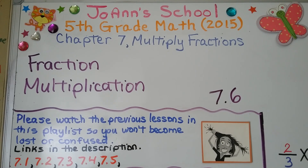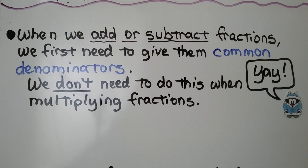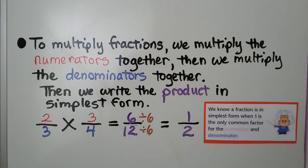Lesson 7.6: Fraction Multiplication. When we add or subtract fractions, we first need to give them common denominators. We don't need to do this when multiplying fractions. To multiply fractions, we multiply the numerators together, then we multiply the denominators together.